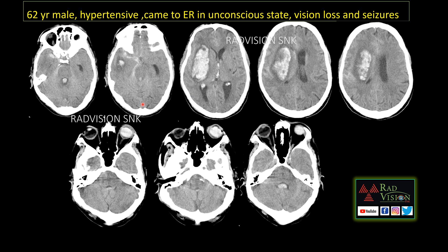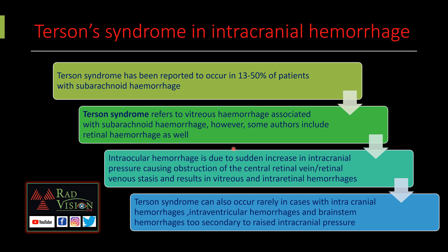There is vitreous hemorrhage and even retinal and subretinal hemorrhage. This is a case of Terson syndrome. In classical Terson syndrome, there will be vitreous hemorrhage associated with subarachnoid hemorrhage, but Terson syndrome can also occur in cases of intraparenchymal hemorrhages other than subarachnoid hemorrhage. Terson syndrome has been reported in 13 to 50% of patients with subarachnoid hemorrhage. Classic Terson syndrome involves sudden rise in intracranial pressure leading to central retinal vein stasis and vitreous or intraocular hemorrhages. Remember: Terson syndrome can also rarely occur in intraparenchymal hemorrhages, intraventricular hemorrhages, and brainstem hemorrhages, apart from subarachnoid hemorrhage.